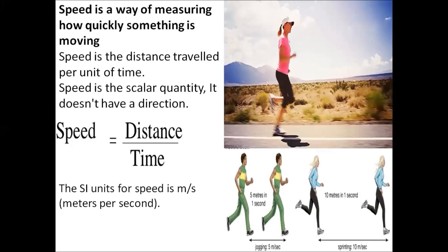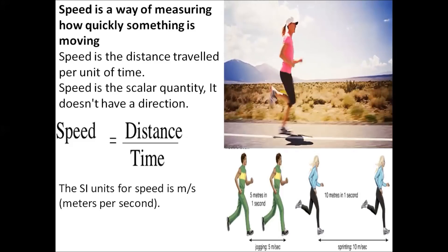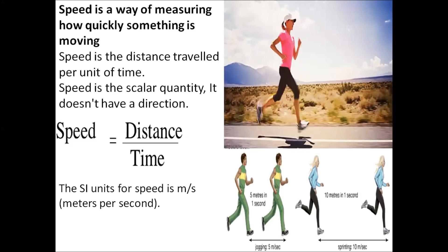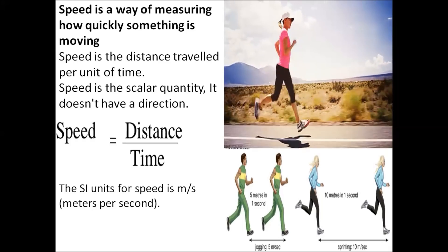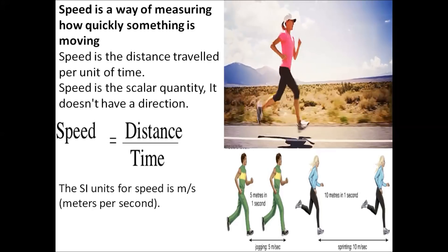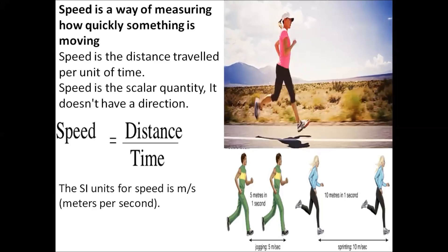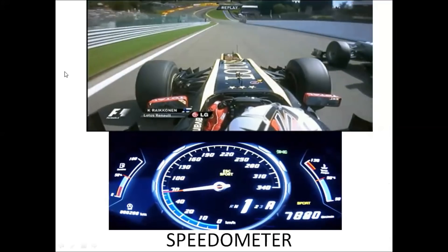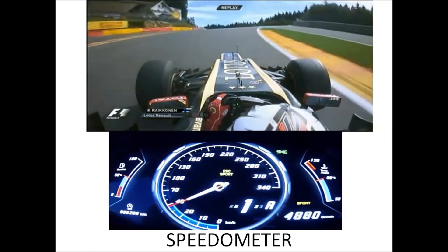Next topic we have is speed. You must have studied about speed in previous classes. Speed is a way of measuring how quickly something is moving. The formula for calculating speed is distance per unit time. Speed is a scalar quantity — it does not have a direction, meaning we do not need to specify any direction with speed. The SI unit for speed is meters per second. The speedometer is a device used for measuring speed.